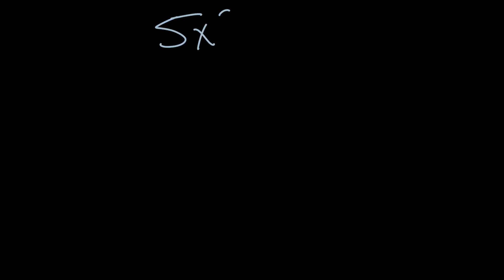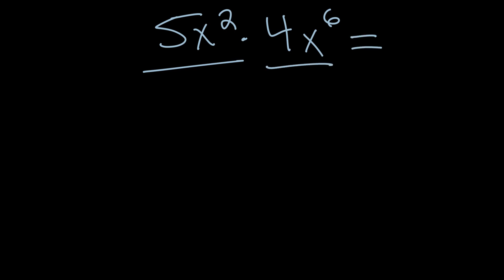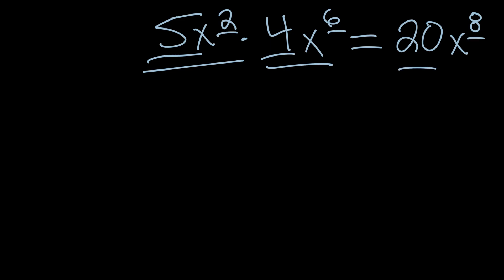By the end of this video it should be very easy for you to multiply a monomial like 5x squared by another monomial. I'm going to give you the answer right now and then slowly walk you through it. The answer is 20x to the 8th. Notice the pattern: what did we do with 5 and 4 to get 20? What did we do with 2 and 6 to get 8?